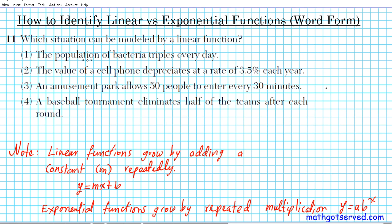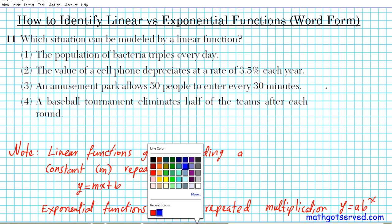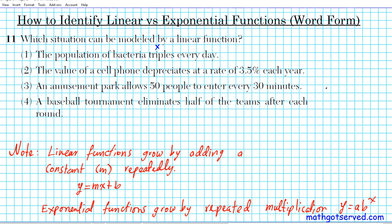The first one says the population of bacteria triples every day. So triple represents what kind of operation? To triple means you multiply by three. So how do the terms of this function grow? They grow by multiplying by three every time. So you multiply by three repeatedly. So if you multiply by three repeatedly, what kind of function is that going to be? It's clearly exponential. So this is not what we're looking for.